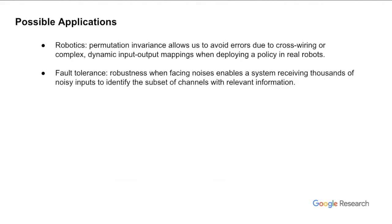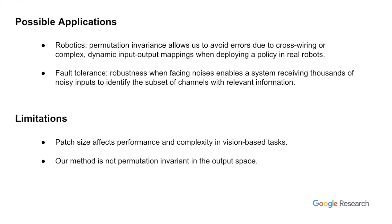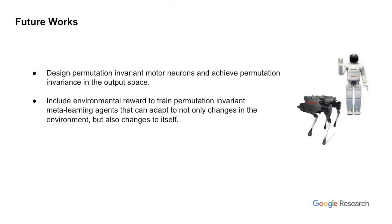One possible application of our permutation invariant agent is in robotics, where such a policy can avoid errors due to incorrect mapping between models and real robots during policy deployment. The robustness demonstrated in the cartpole experiment also suggests a fault-tolerant system that can identify useful information from noisy inputs. One limitation is that patch size selection affects both performance and complexity for vision-based tasks, and another is that permutation invariance only applies to inputs, not outputs. For future work, we plan to achieve permutation invariance in both input and output space, which may allow a single policy to control multiple robots of different morphologies. It is also possible for attention neurons to accept more external information such as reward signals, enabling meta-learning for better adaptation.